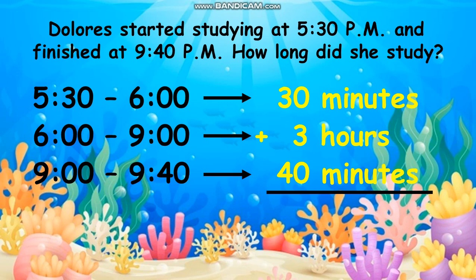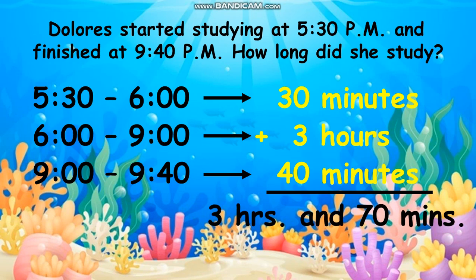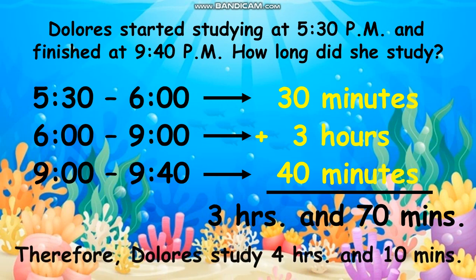30 minutes plus 3 hours plus 40 minutes is equal to 3 hours and 70 minutes, or 4 hours and 10 minutes. Therefore, Dolores studied 4 hours and 10 minutes.